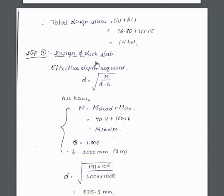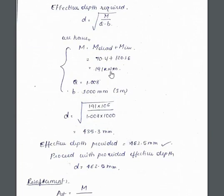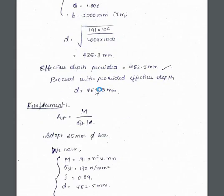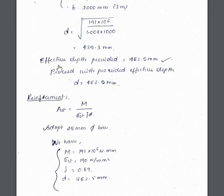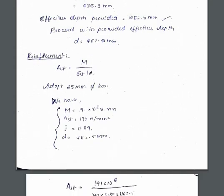Later you have to design the deck slab, so you have to find out the effective depth required. D is equal to root over M by Q into B. M is M dead plus M live, so 191 kilonewton meter. Q is 1.008. In step 1 itself you have found out the value of Q. B is 1 meter, we are taking 1000 mm. Substitute all the values, you will get the effective depth 435.3. Effective depth initially we have calculated and provided something, that is 462.5, it is actually provided. This is required. We have provided more than the required, that is good. So proceed for the design with the provided effective depth, that is D equal to 462.5 mm.